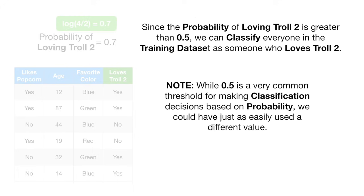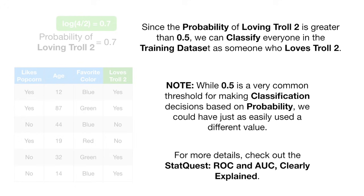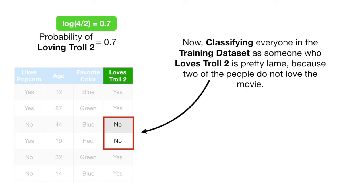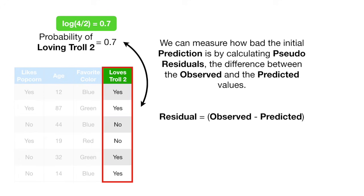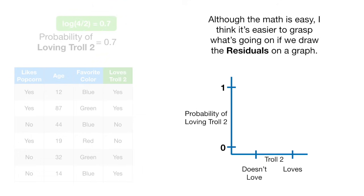Note: while 0.5 is a very common threshold for making classification decisions based on probability, we could have just as easily used a different value. For more details, check out the StatQuest ROC and AUC clearly explained. Now, classifying everyone in the training data set as someone who loves Troll 2 is pretty lame, because two of the people do not love the movie. We can measure how bad the initial prediction is by calculating pseudo-residuals, the difference between the observed and the predicted values.